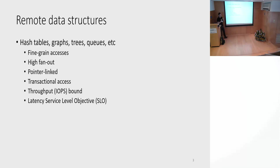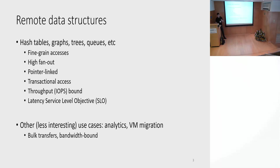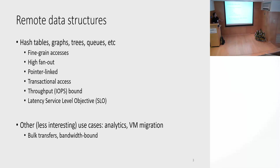We need transactional access to our data structure, high throughput, and a good latency SLO. There are also other, perhaps less interesting use cases — for example, doing analytics or VM migration — where we're essentially transferring a large amount of data from point A to point B. As long as we have enough memory bandwidth we'll run at maximum network speed. But getting a data structure over RDMA right is a lot more difficult to do.